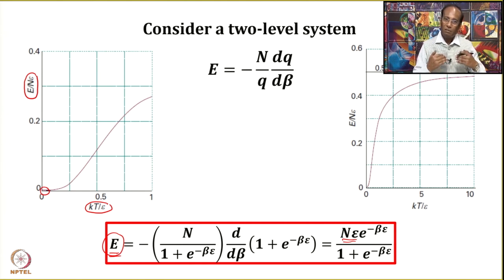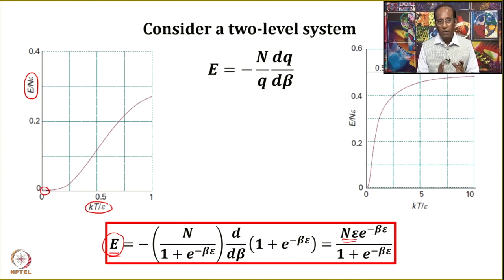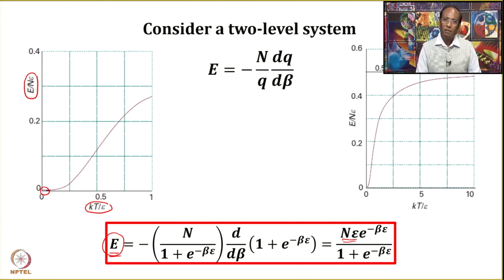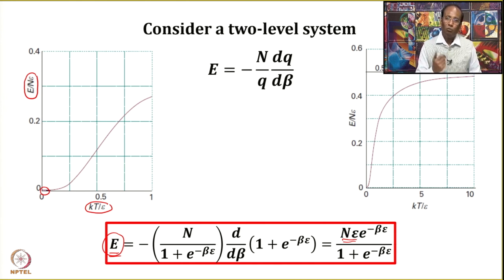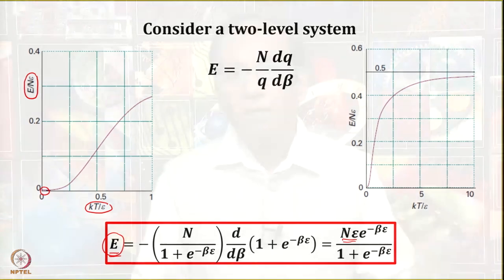Similarly, you can take a three-level system, four-level system, or bring in degeneracy and derive various expressions. This is about the total energy of a system.